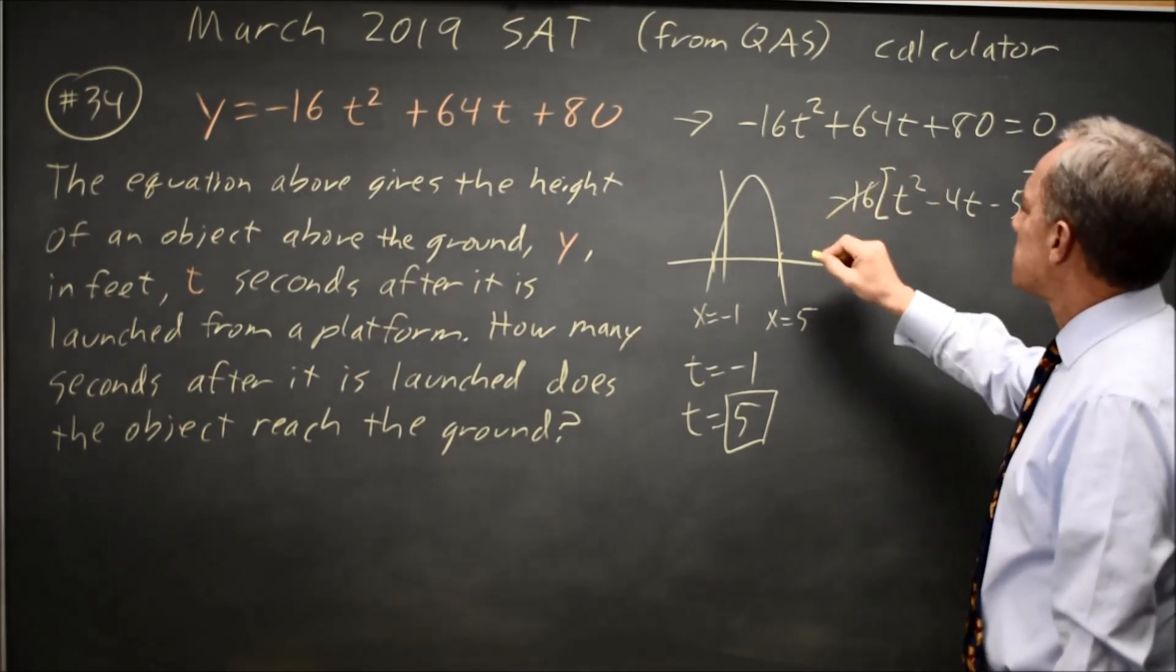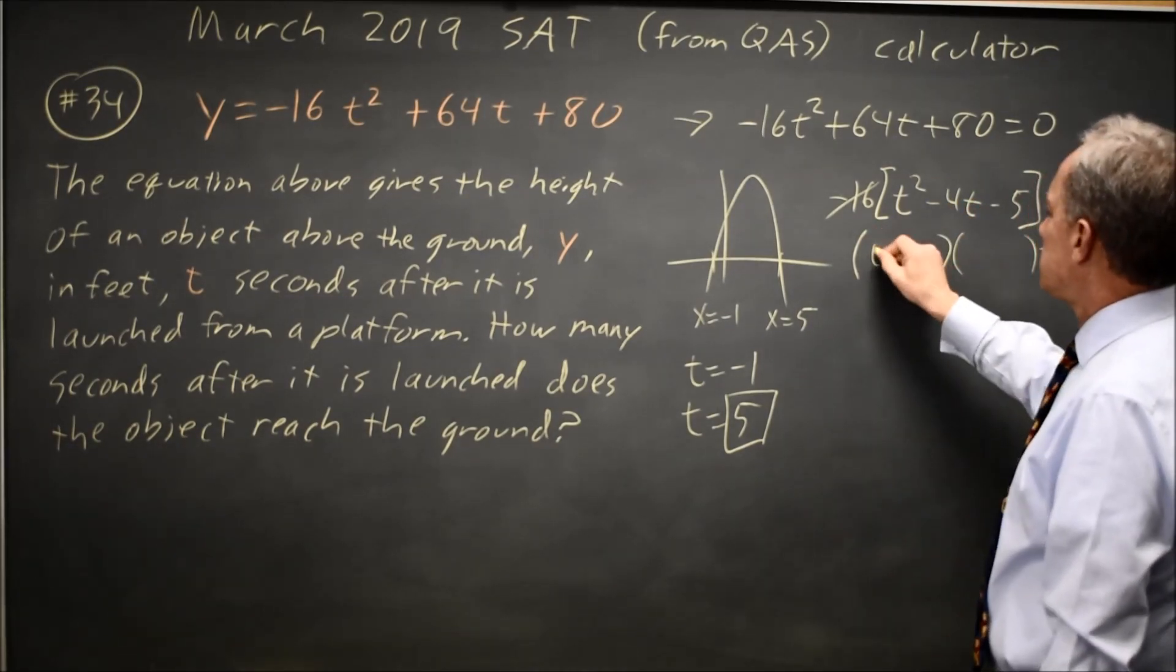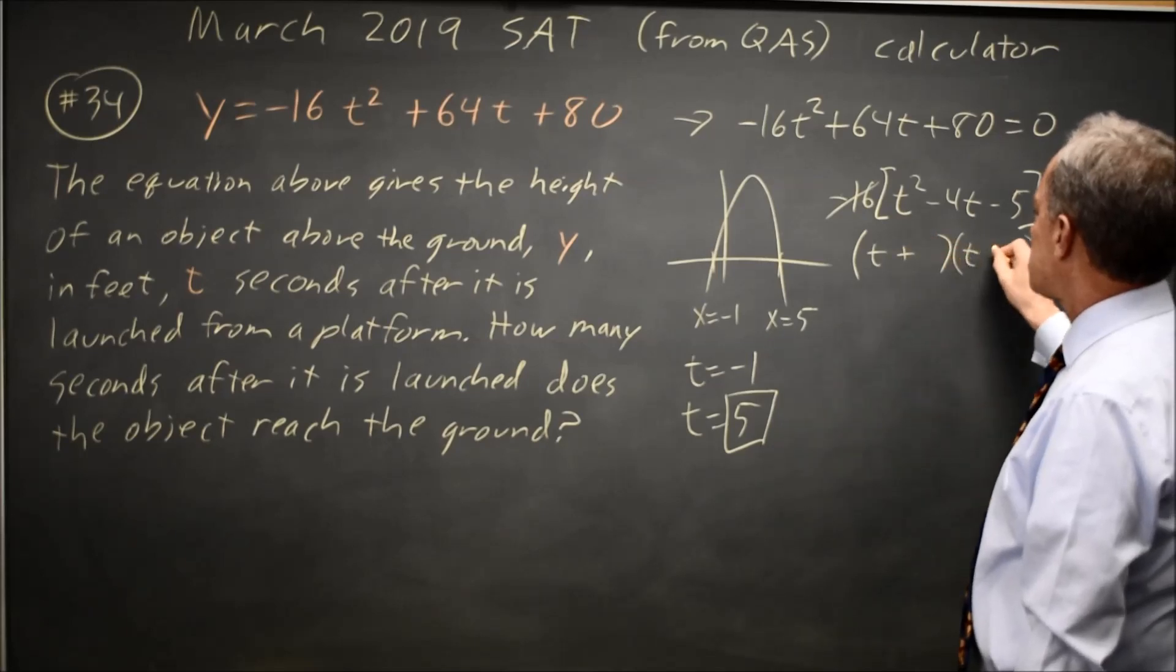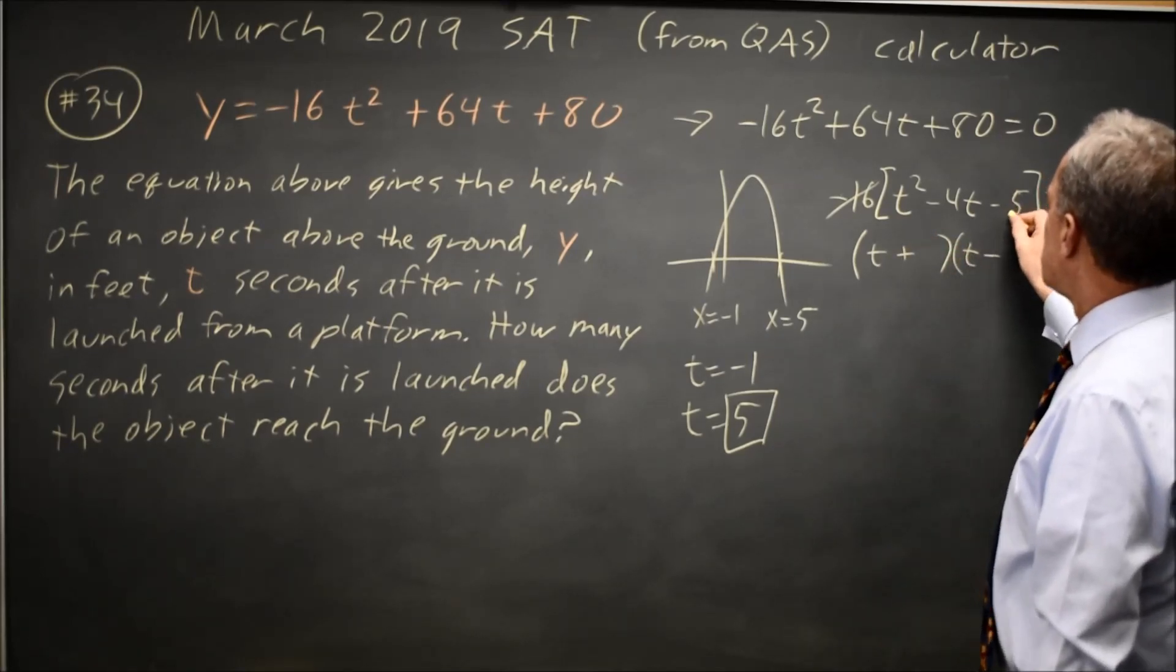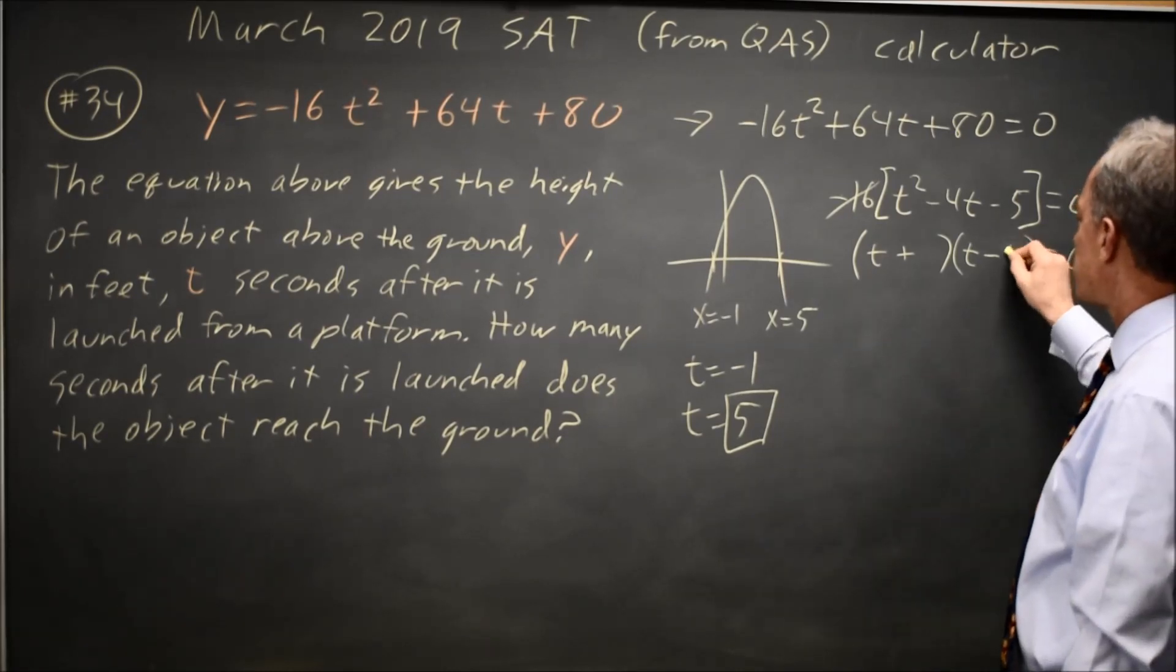Since negative 16 is not 0, I know that the quadratic is 0. I'm going to factor it. t and t plus and minus two numbers. The product is 5. Negative 5, the difference is negative 4, so the 5 would be negative, and the 1 would be positive.